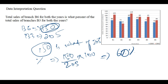So the sale of branch 6 is 60 percent of the sale of branch 3. That also means the sale of branch 3 is 40 percent more than branch 6, since branch 6 is only 60 percent of branch 3.